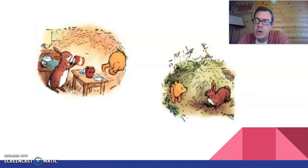Rabbit scratched his whiskers thoughtfully and pointed out that when once Pooh was pushed back, he was back, and of course nobody was more glad to see Pooh than he was. Still there it was. Some lived in trees and some lived underground, and you mean I'd never get out, said Pooh. I mean, said Rabbit, that having got so far, it seems a pity to waste it. Christopher Robin nodded. Then there's only one thing to be done, he said. We shall have to wait for you to get thin again. How long does getting thin take, asked Pooh anxiously. About a week, I should think. But I can't stay here for a week. You can stay here all right, silly old bear. It's getting you out, which is so difficult.